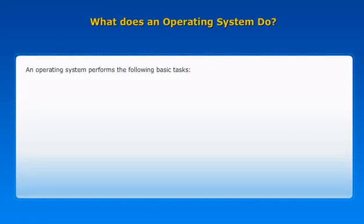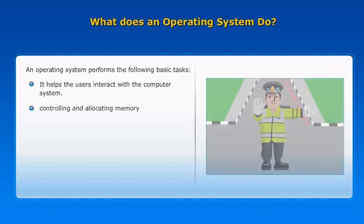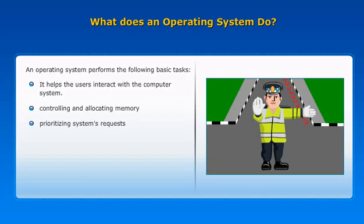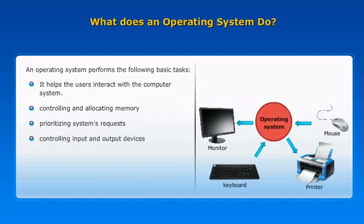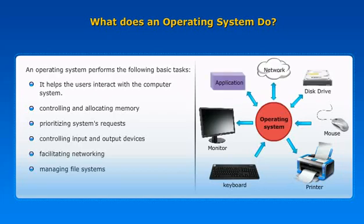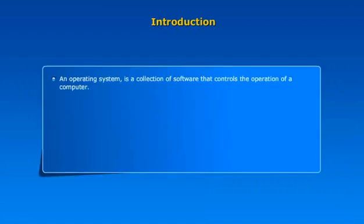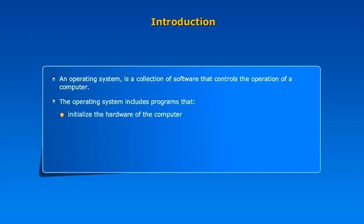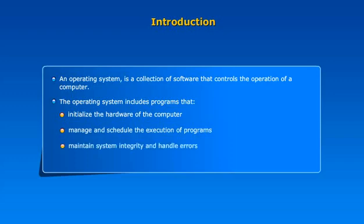An operating system performs the following basic tasks: it helps users interact with the computer system, controls and allocates memory, prioritizes system requests, controls input and output devices, facilitates networking, manages file systems, protects data, handles errors, and provides an interface that allows a user to interact with the computer.